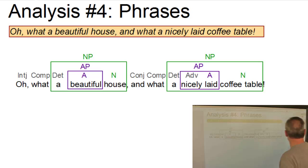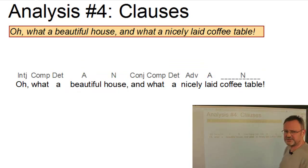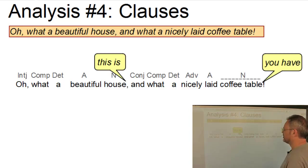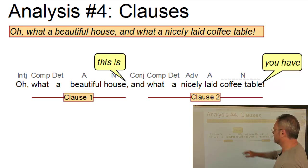Let's now analyze the clausal structure of our sentence. The sentence has two elliptical main clauses whose meaning can be recovered by adding elements such as: what a beautiful house this is, or what a nicely laid coffee table you have. The clauses themselves are: what a beautiful house, and what a nicely laid coffee table.